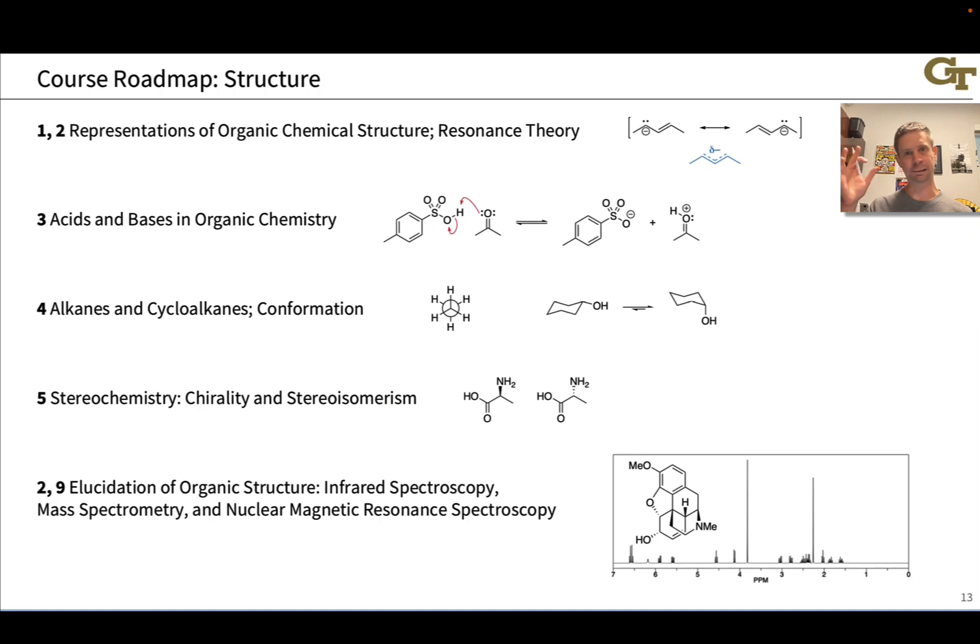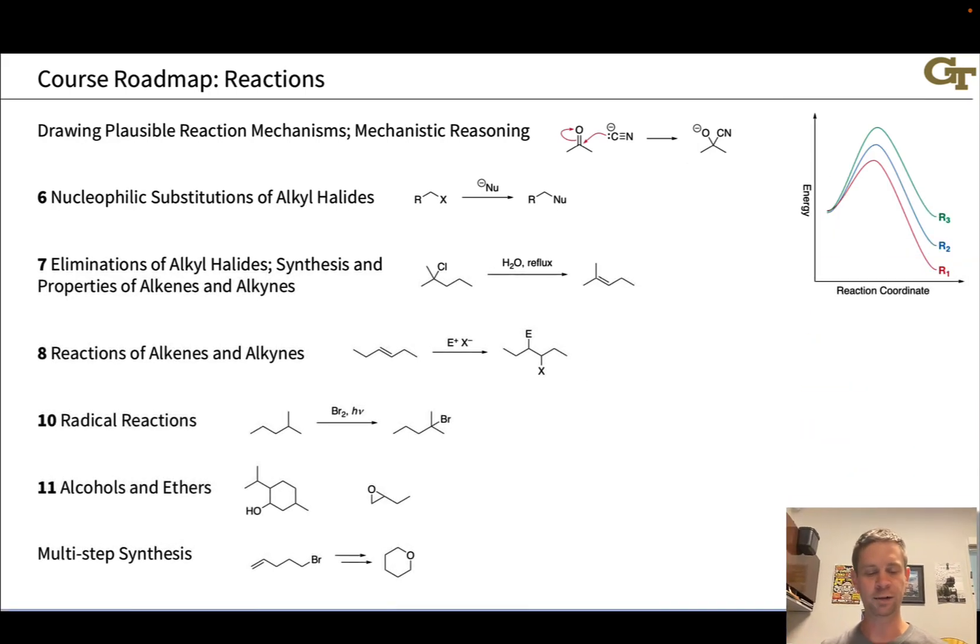We then moved into the last structural topic, which was spectroscopy, the rock-bottom evidence for the structures of organic compounds, looking at infrared, mass spectrometry, and nuclear magnetic resonance or NMR spectroscopy. Depending on your Organic Chemistry 2 course, you may never see spectroscopy again, or you may see it on a regular basis. When you get into the laboratory, it's going to become hugely important, because this is really the evidence you have that supports the assertion that you made what you expected to make. Spectroscopy is super important in a lab context, and that is just as true in Organic Chemistry 2 lab as it is in Organic Chemistry 1 lab. After this point, we moved into reactions.